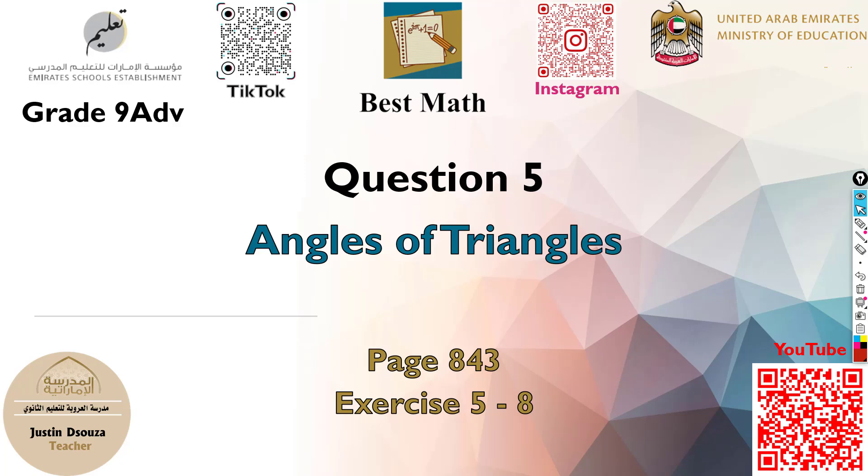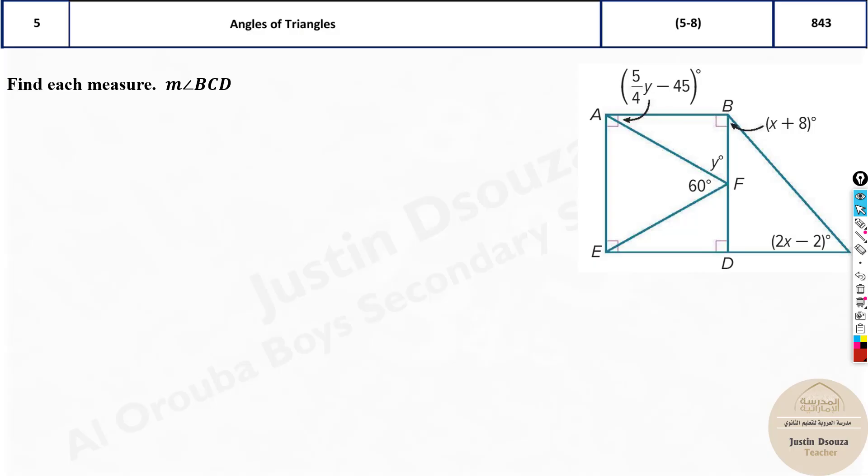Question 5 is about angles of triangles. Here we need to find the measure of different angles. Let's look at what they have asked us to measure. It's B, C, and D. So this is C away at this point.